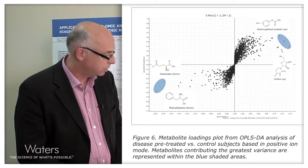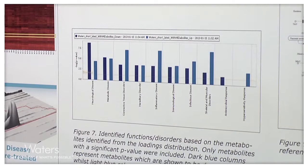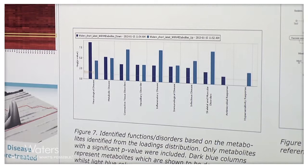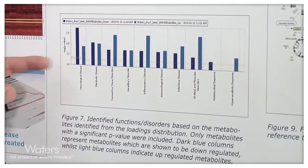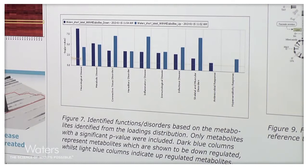We can take these metabolites further and map them in terms of their functional analysis, ordering each metabolite into its functional group so we can see whether metabolites are up or downregulated based upon their function. The dark blue shows that neurological disease-related metabolites are downregulated in the disease patients, whereas metabolites related to connective tissue disorders, inflammatory disease, and skeletal and muscular disorders are upregulated in the disease patients, as might be expected.